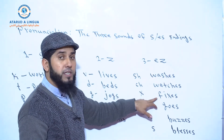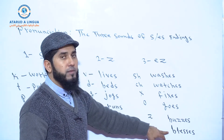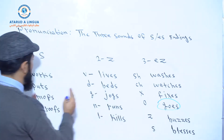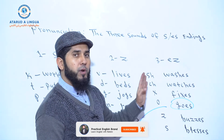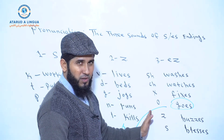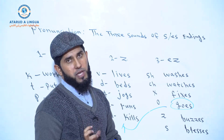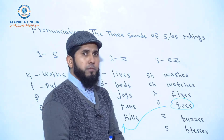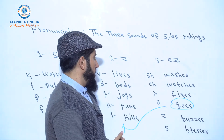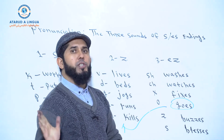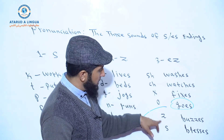Watch — watches. Watch — watches. Fix — fixes. Go — goes. Buzz — buzzes. Bless — blesses. So if you see that a verb or noun ends with these letters, and it's a verb in simple present tense with a third person singular subject, this is how you pronounce them with the IZ sound. For example: watch — how many watches did you buy yesterday? Push — pushes. Watch — watches. Fix — fixes.